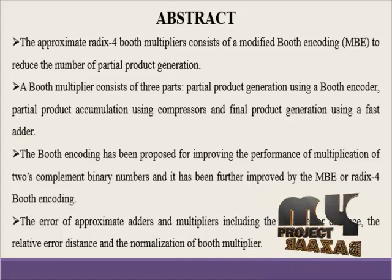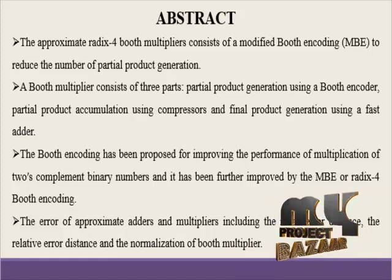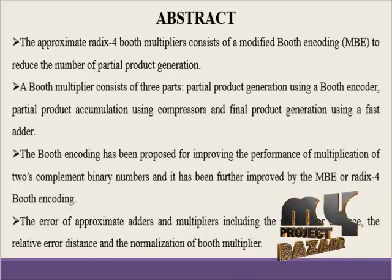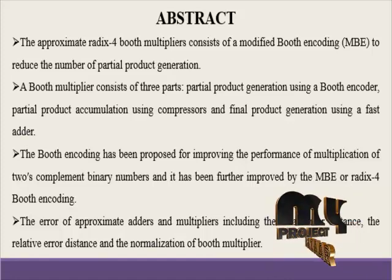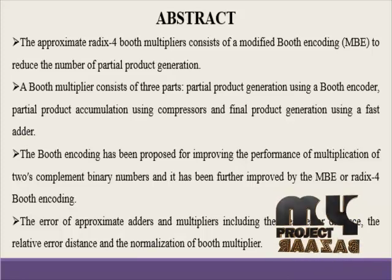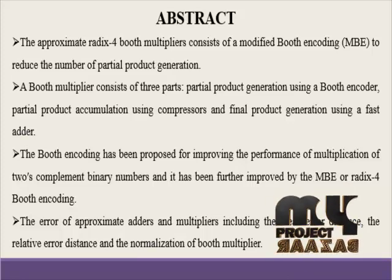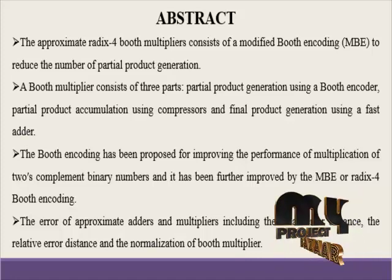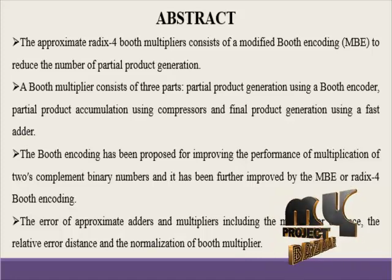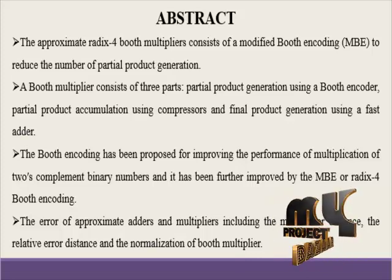Encoding plays an important role in multiplying — it reduces the number of partial product rows and improves power and area efficiency. The approximate Radix-4 encoding level is carefully considered by the sum sequence of input bits. Finally, after designing the product array, the error in the approximate adder is normalized using a distance-based method for the booth multipliers.